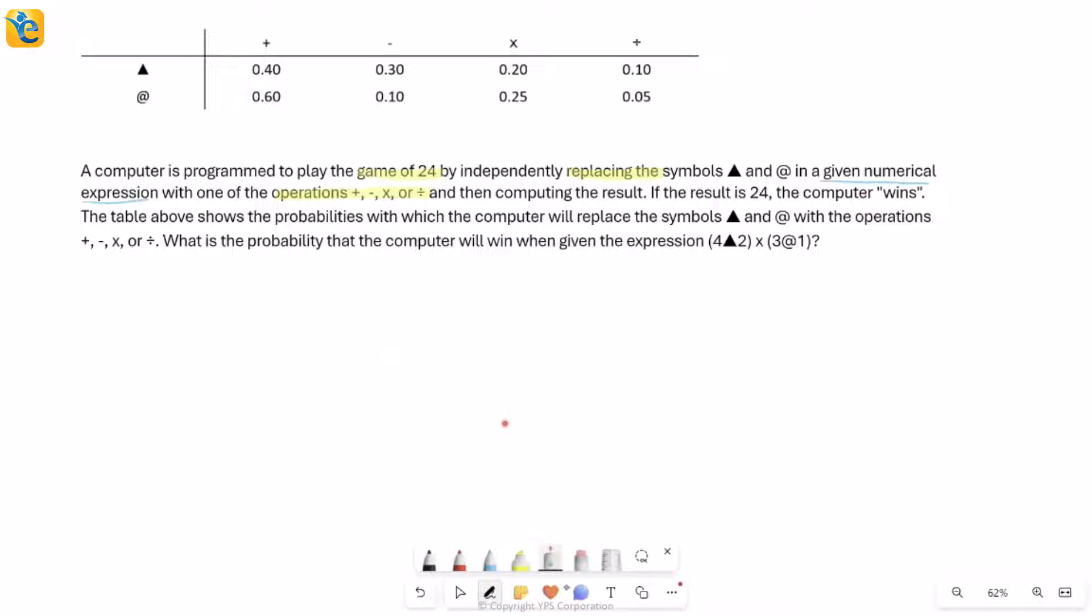Say 2 triangle 3. And what the computer does is it replaces this triangle by either a plus, minus, multiplication, or division symbol. And then it computes the final answer. Now what happens is that once it computes the result, if the result is 24, then the computer wins. Otherwise, of course, it doesn't win. Now, for example, for my 2 triangle 3, there's no way the computer can win because whether you put a plus or a minus multiplication division, this result is never going to be 24. I can't add or subtract or multiply or divide them to get 24. So in this case, the computer will never win, right? But in different expressions, the chances will be different.